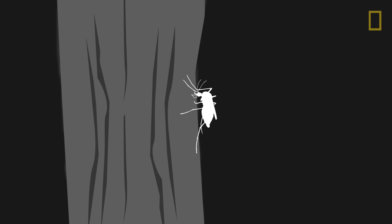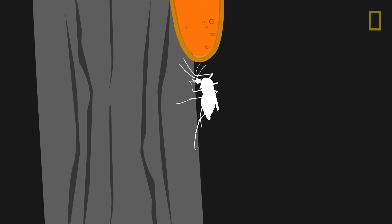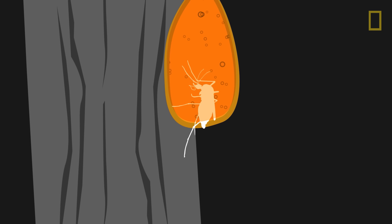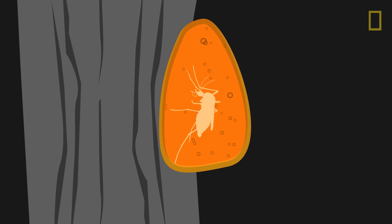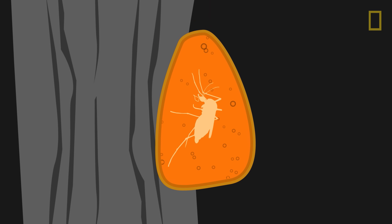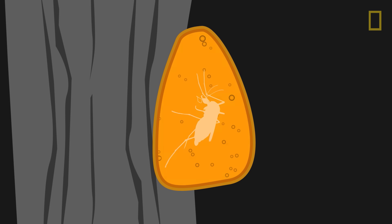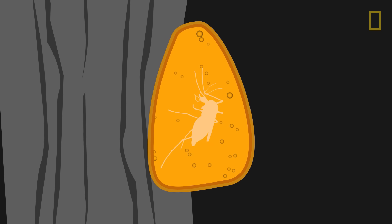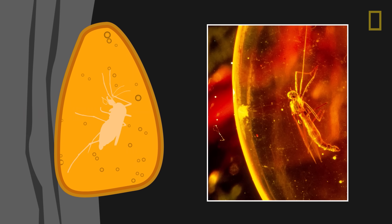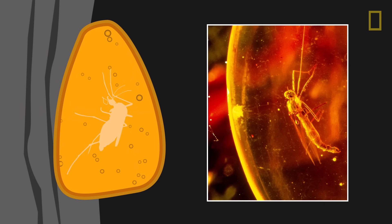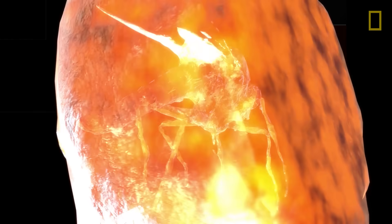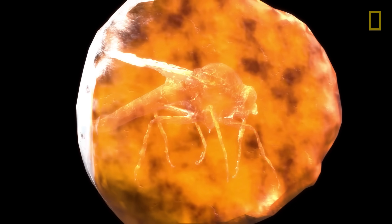This process begins when an organism is covered in tree sap. The sap, or resin, forms a protective seal around the entrapped organism. Over time, the soft resin hardens and turns into amber, with the organism suspended within. This process creates a biologically inert tomb for the organism, allowing its soft tissues to be remarkably preserved.